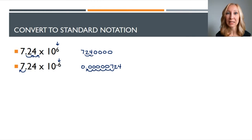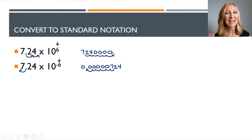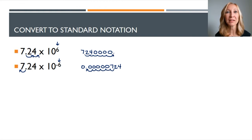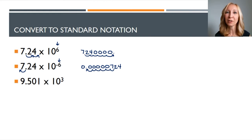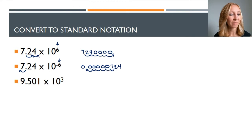So when we have ten to the sixth it's a big number, and when we have ten to the negative sixth it's a small number. Often I see students make errors here because they see that negative six and think it's a negative number — it's not. It's just a very very small number, a number less than one. Try this one on your own: pause the video and write it out. We have nine point five zero one times ten to the third.